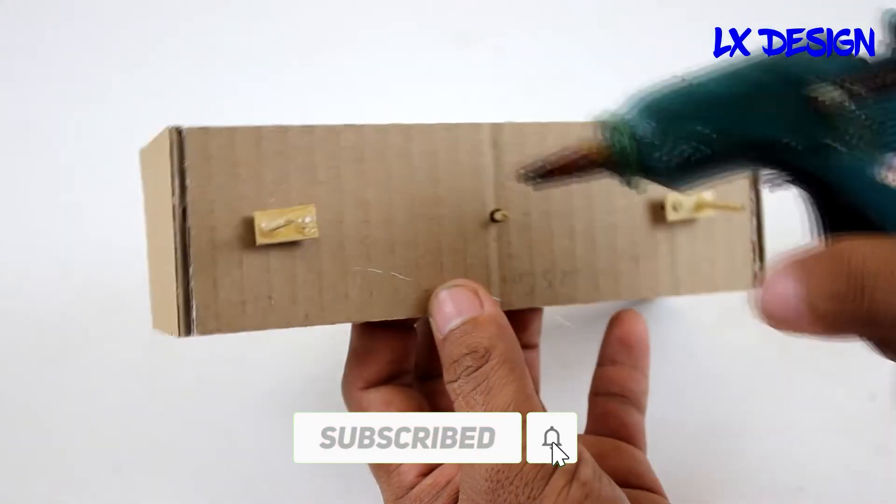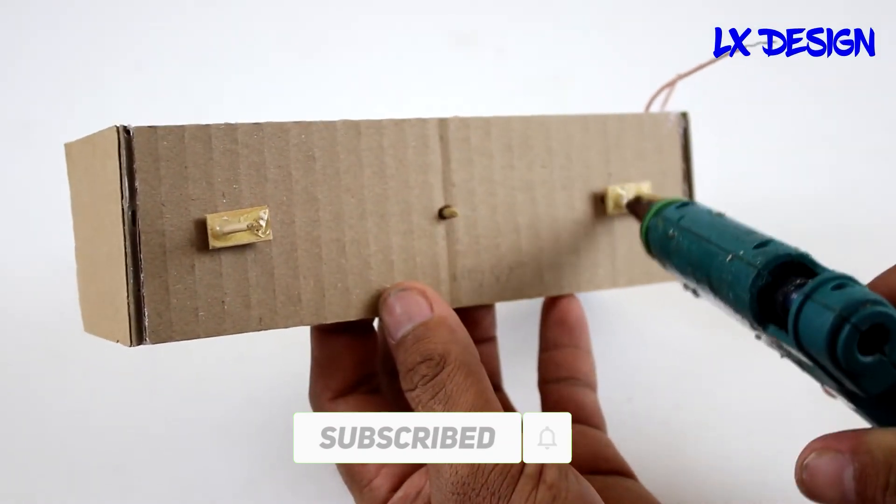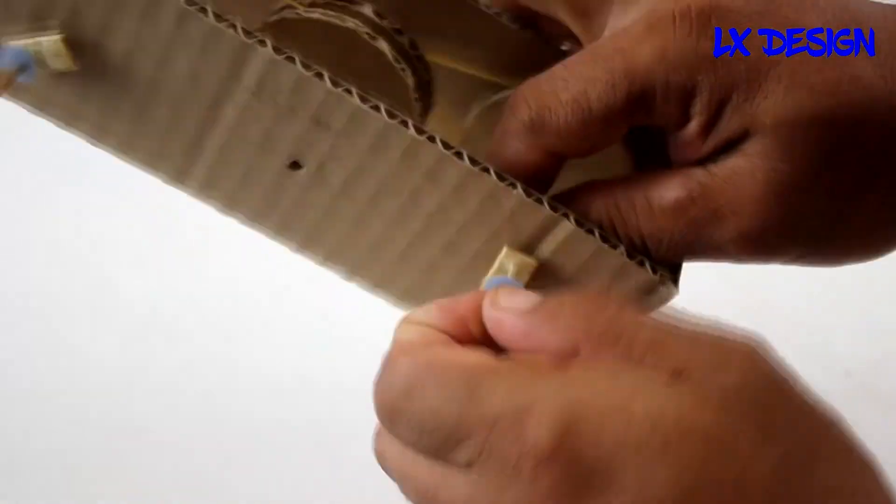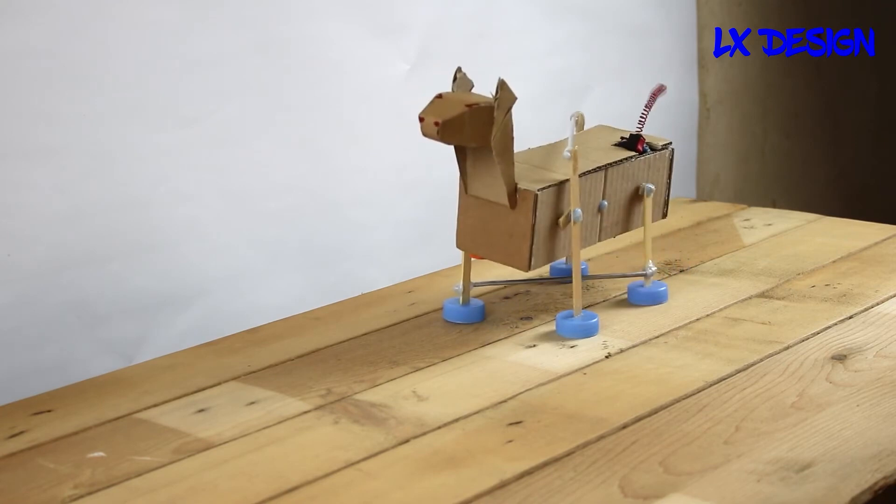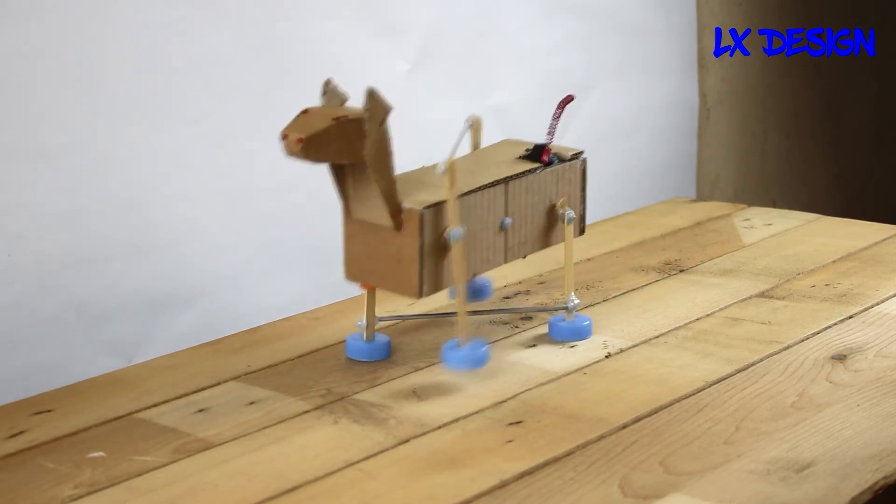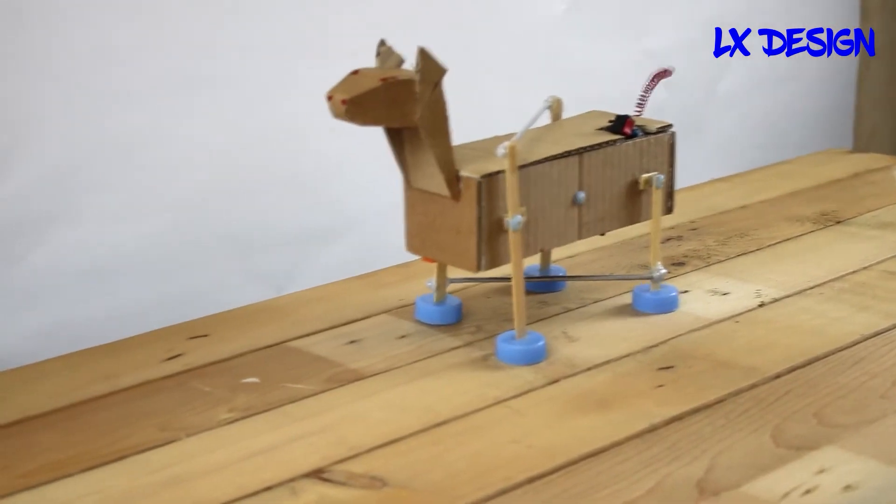You will also need some wires, a battery pack and a computer for this project. You can use a simple block based language to make your dog walk and bark. For example, you can make your dog walk by turning the legs on and off in a sequence. You can make your dog bark by turning the buzzer on and off in a pattern.